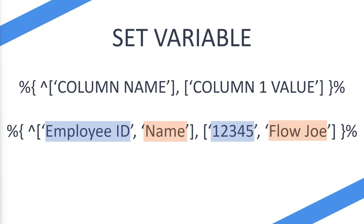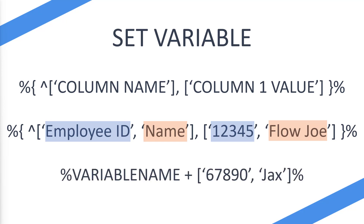So that's how you create a table — how do you then update it or add data to it? Once you've created the table using set variable, you'll have a variable name linked to it. In another set variable, you reference that variable name, then use a plus sign followed by square brackets to pass in the new row values. In this instance, we'd pass in 67890 as the employee ID, then Jax as the name. So we'd have one row of 12345 and Flojo, and then we'd be adding another row of 67890 and Jax.